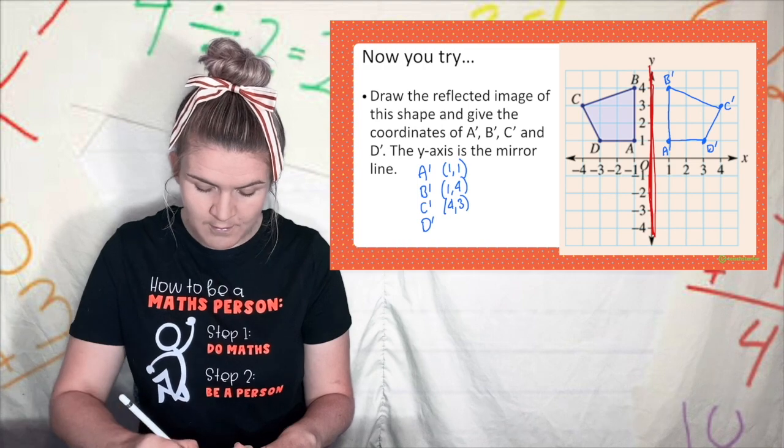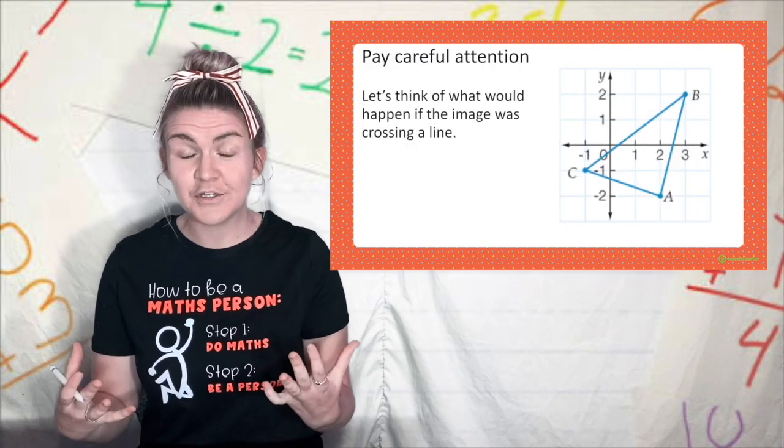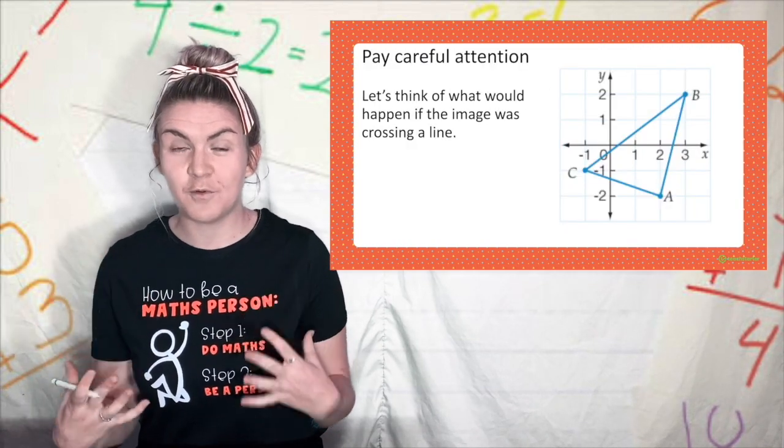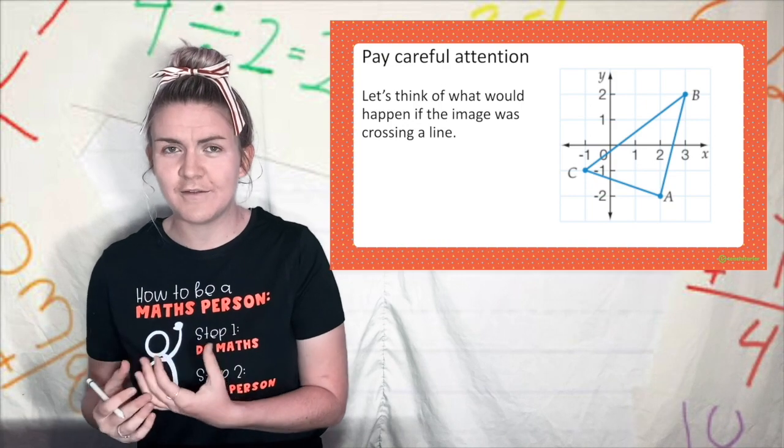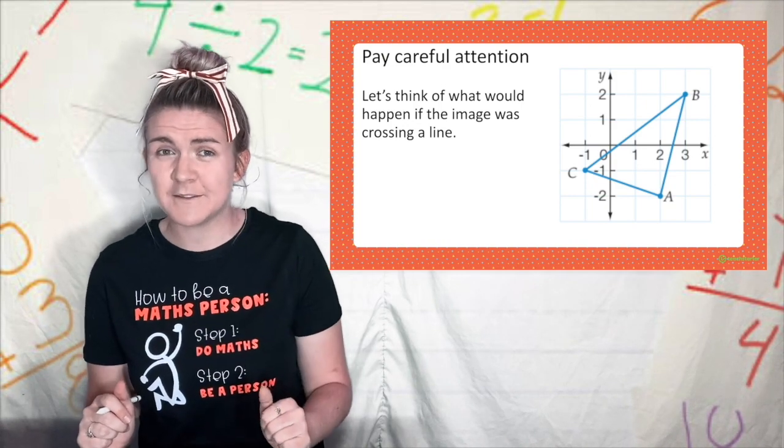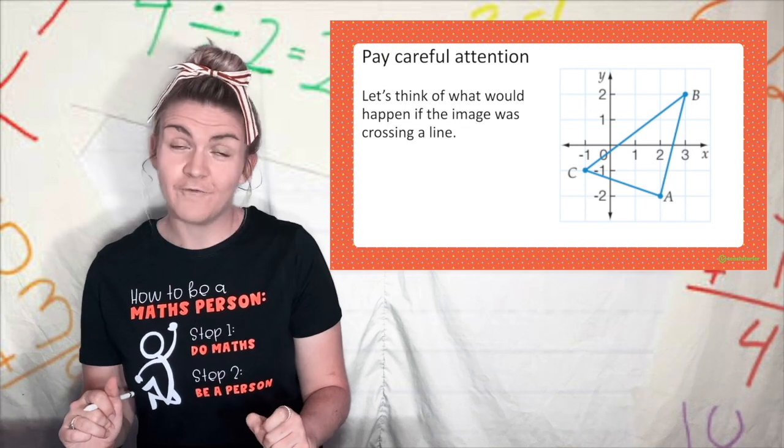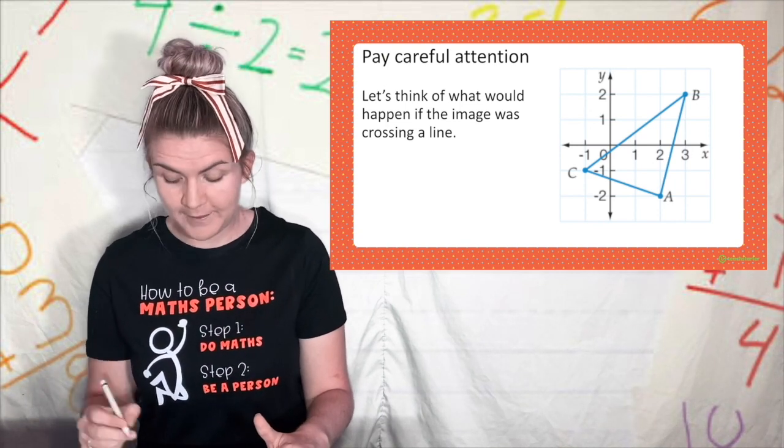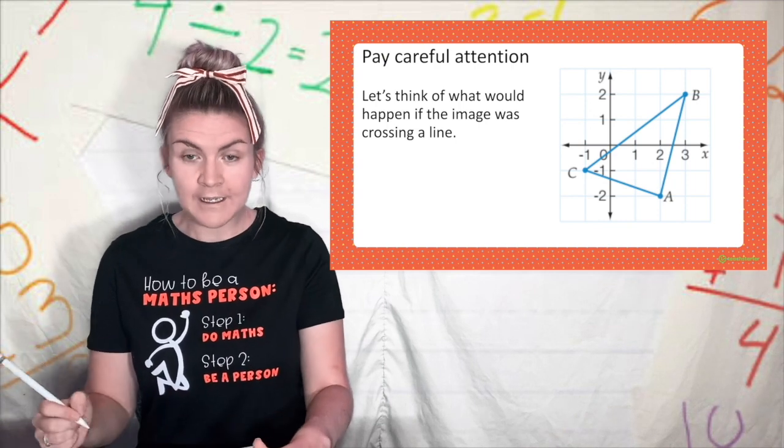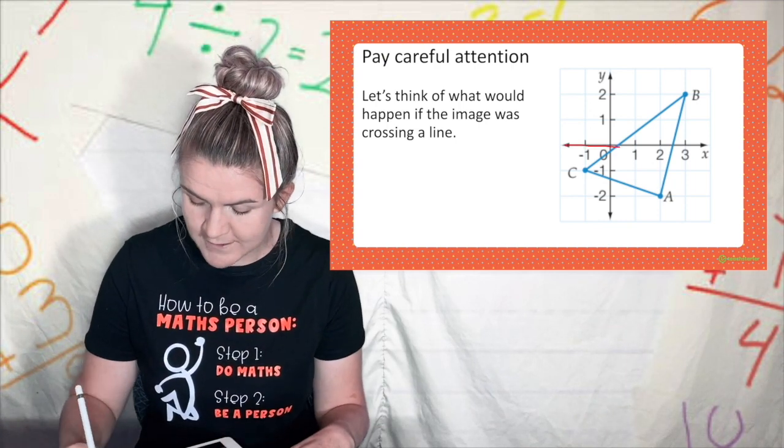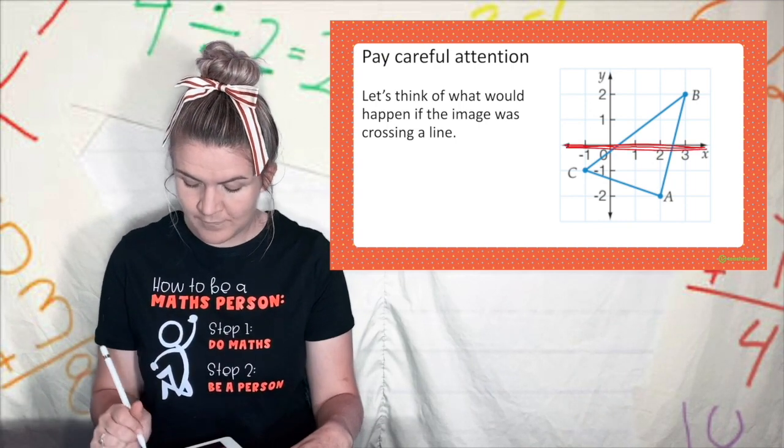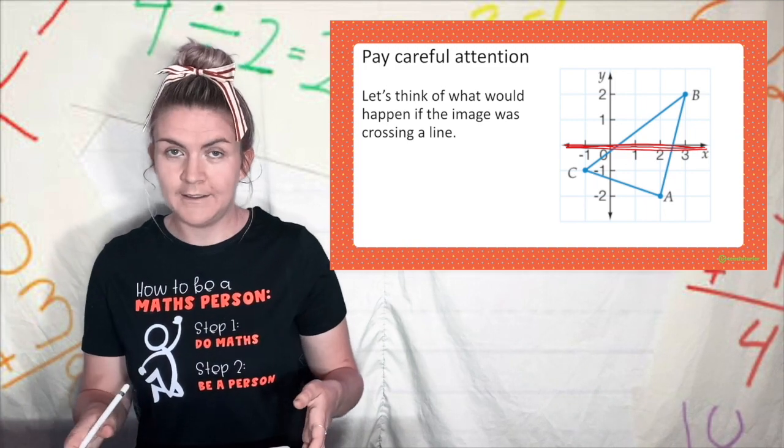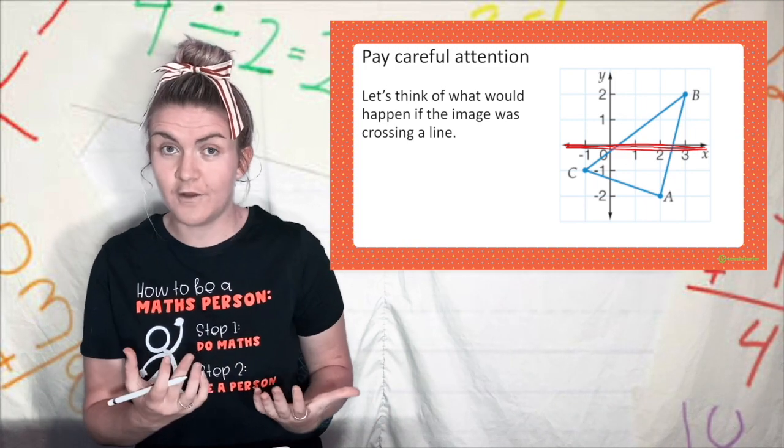I do want you to take my advice and reflect each point one at a time. I know you may be thinking oh I can do the whole shape but sometimes it gets a bit tricky and you might stuff things up. For example if our shape is crossing our mirror line it can get a bit complicated but we can do it. Here I'm going to reflect this shape across the mirror line of x. It may seem hard and a little bit complicated but it's actually quite easy if we just follow our steps.